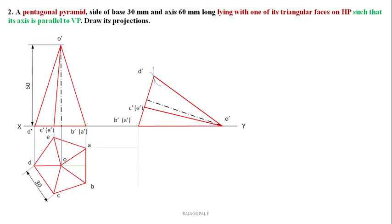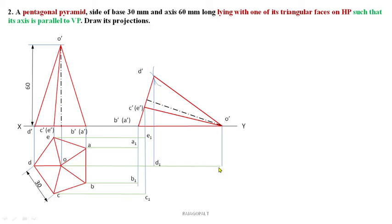After completing this, extend the projectors from all the respective corners of the pentagonal surface as well as the apex O dash. This is familiar because we solved already three more problems in the pyramid. Fix all the corners by marking the meeting point of respective corners. Notice the difference between these two problems. In the last case, corner is on this side because we tilted only the slant edge. Here we make sure that O dash A dash B dash is the triangular face which is exactly on HP.